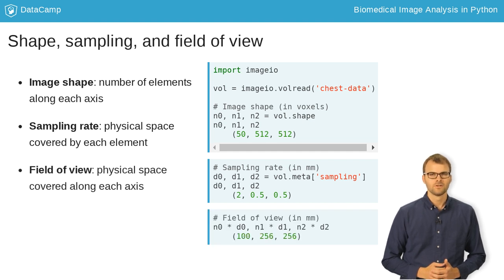The field of view is the total amount of space covered along each axis. It is the product of the shape and sampling rate. Understanding the difference between these concepts is important, and we'll return to it throughout this course.